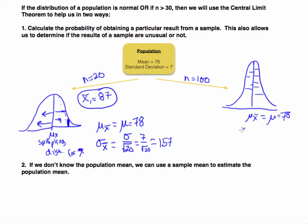I can calculate the standard error by taking the population standard deviation of 7 and dividing by the square root of our sample size, 100. That gives 7 divided by 10, which equals 0.7. So when dealing with a sample size of 20, our bell curve had a larger standard error of 1.57 and was wider. With a sample size of 100, the sampling distribution mean is still 78, but the standard error is 0.7, so the bell curve is much skinnier.